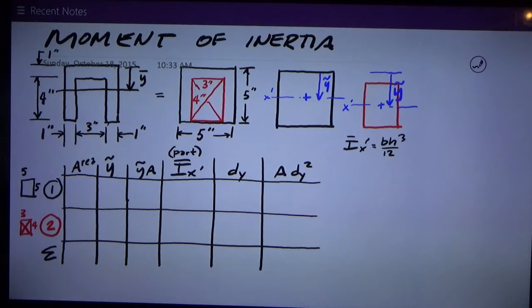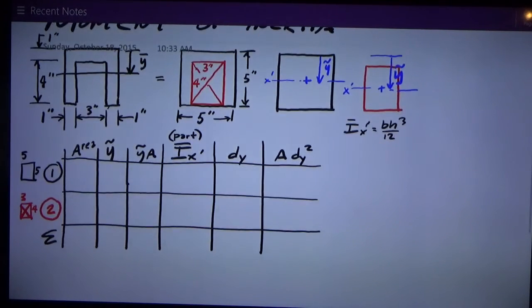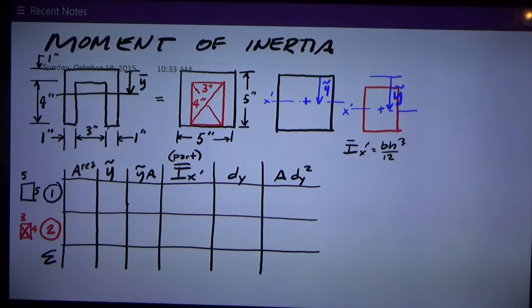I'm going to break it up into a five by five square that is a positive area, then I'm going to cut out that three by four area that I've shown in red and calculate based on each part.